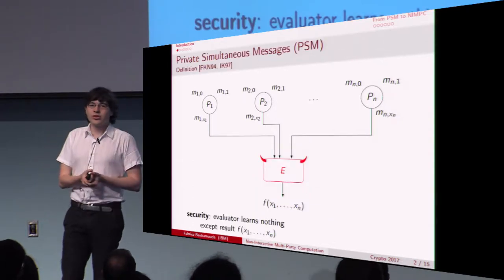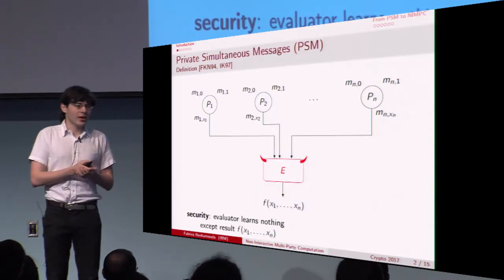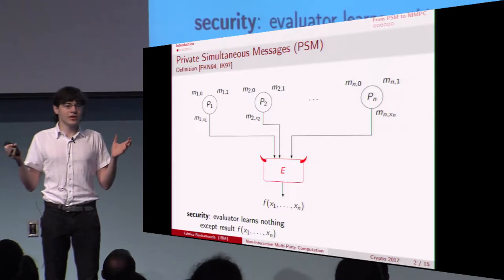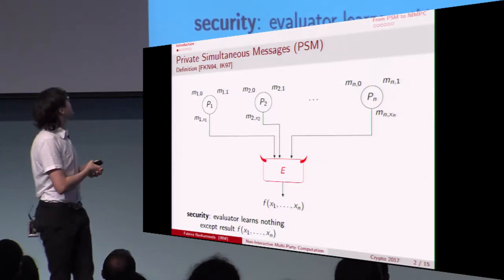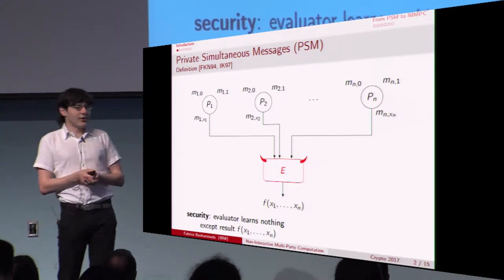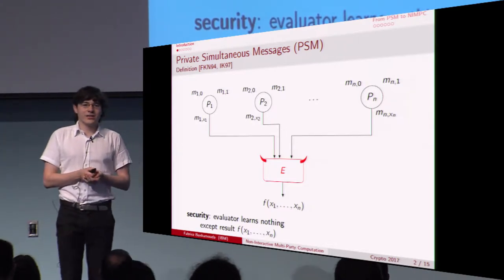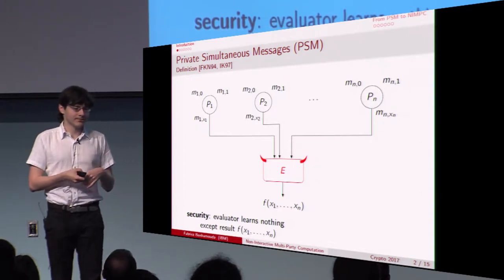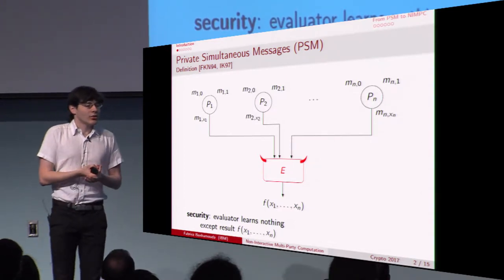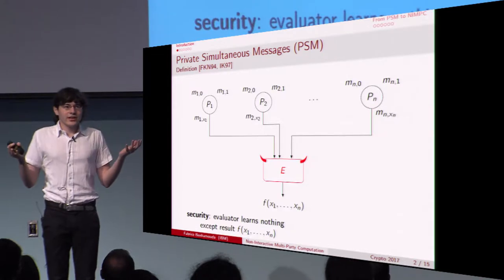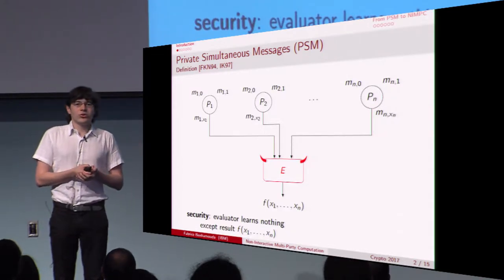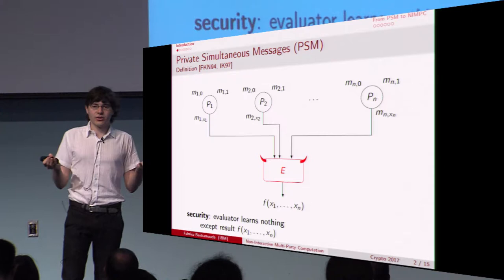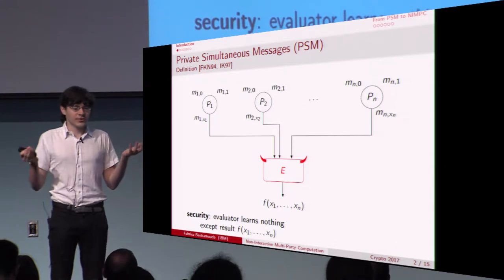This kind of protocol is modeled by a Private Simultaneous Messages protocol, or PSM for short. This was introduced by Feige, Kilian, Naor, and Kushilevitz. In the general model, instead of considering voting as a function, you consider a general function f.